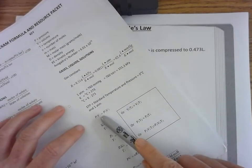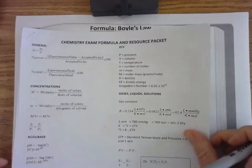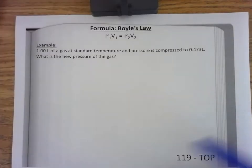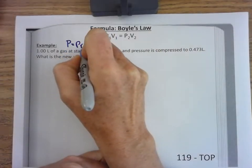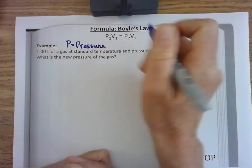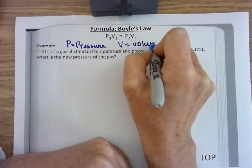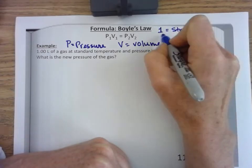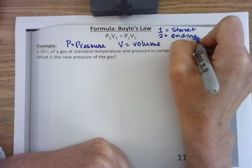But you do need to know what P and V equal. Again, in your district packet, pressure and volume are listed. So P is equal to pressure and V is equal to volume. One is equal to starting conditions and two is equal to ending conditions.